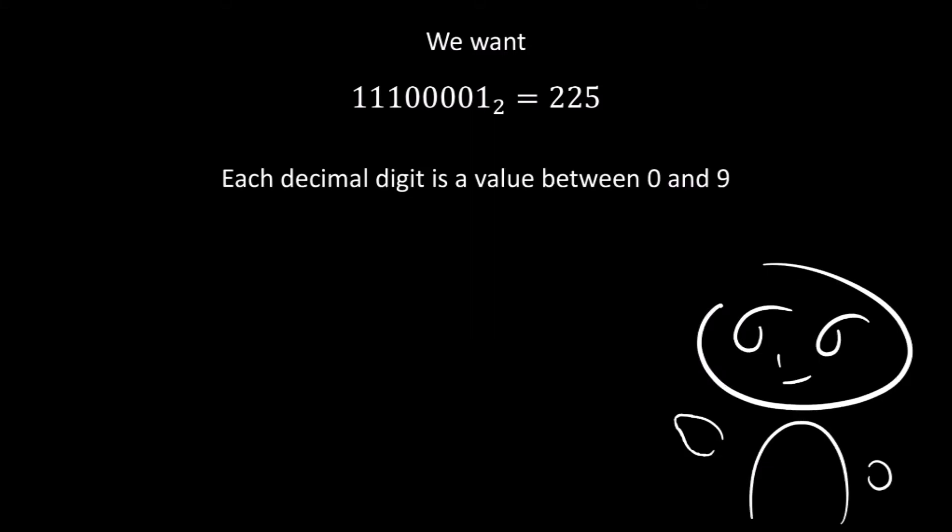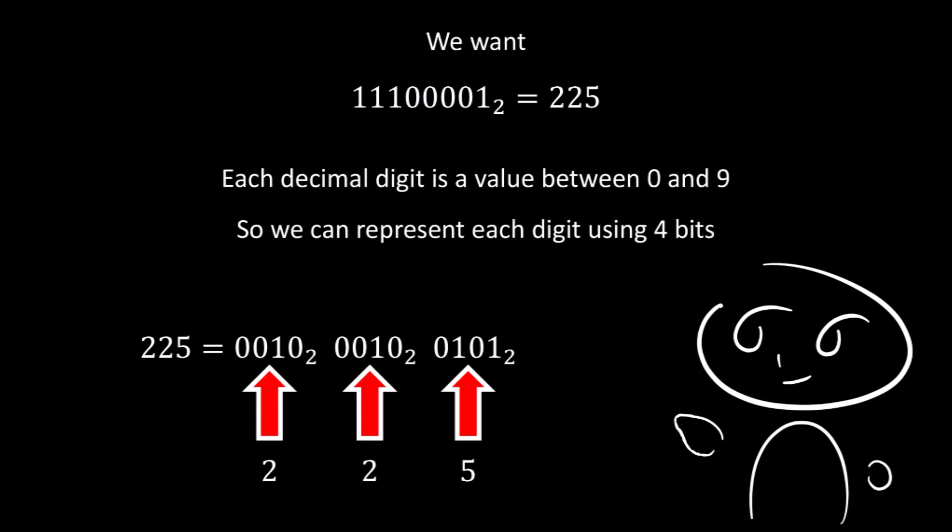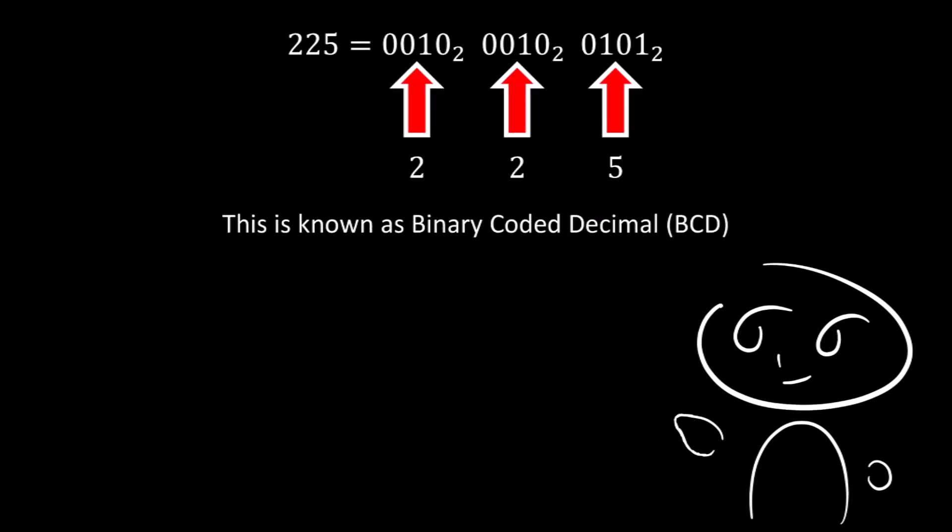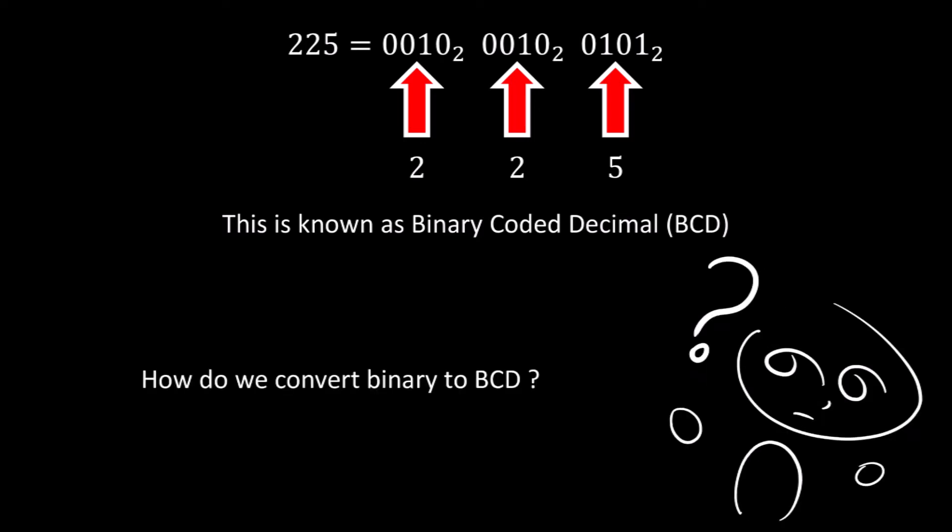So we want to convert the binary into 225. Now, each digit in the decimal value can be a value between 0 and 9. So if we want to represent that in binary, we must represent each digit using 4 bits. So we can do that, giving us 225. And this is what's known as binary-coded decimal, or BCD, since these are a binary representation of the decimal value. So how, then, do we convert binary to BCD?